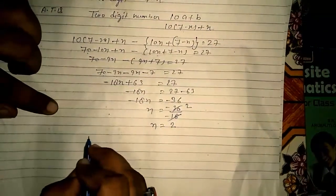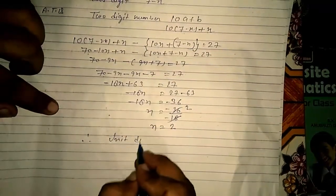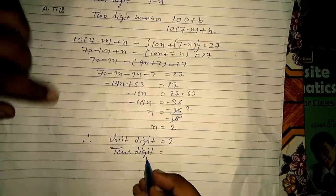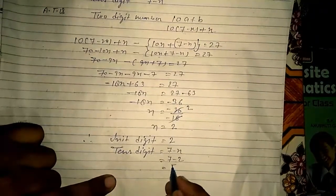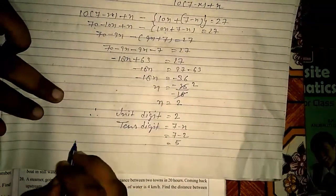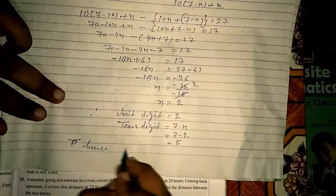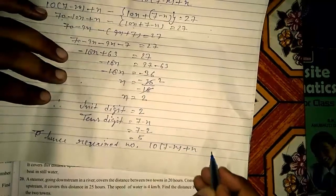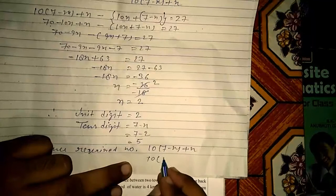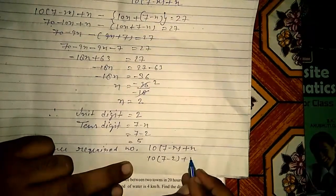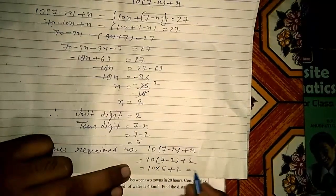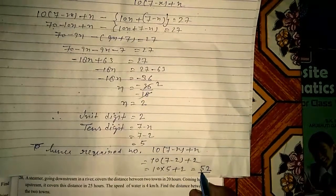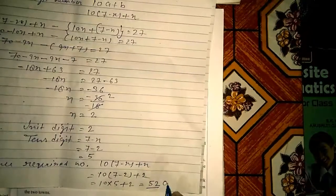We found x = 2. The unit digit is x = 2 and the tens digit is 7 − x = 7 − 2 = 5. Hence the required number is 10(7 − x) + x = 10 × 5 + 2 = 52. The sum of digits 5 and 2 is 7 ✓. When digits are interchanged the answer is 25.